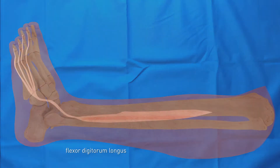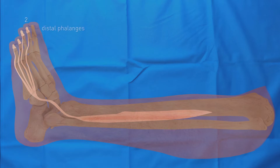The flexor digitorum longus runs posteriorly around the medial malleolus and then continues under the foot until it attaches to the base of the second, third, fourth, and fifth distal phalanges. Digital flexion is performed by this muscle and its corresponding tendons.